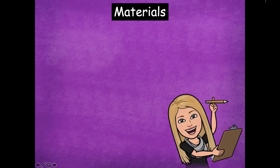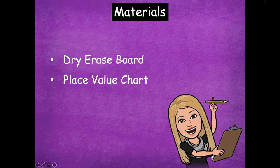So the materials that you need will be a dry erase board and a place value chart. If you don't have a place value chart, you can just draw it on your dry erase board with a tens and ones column.